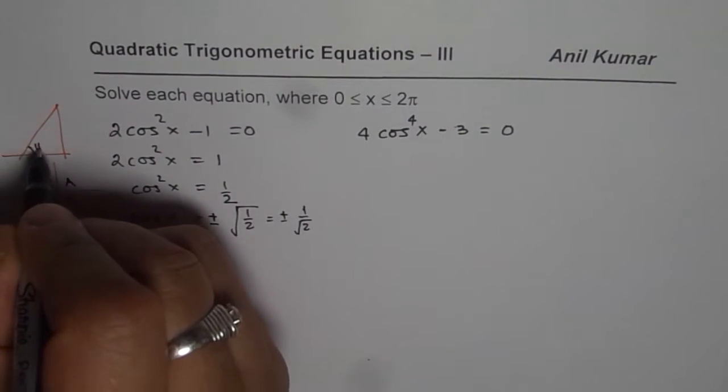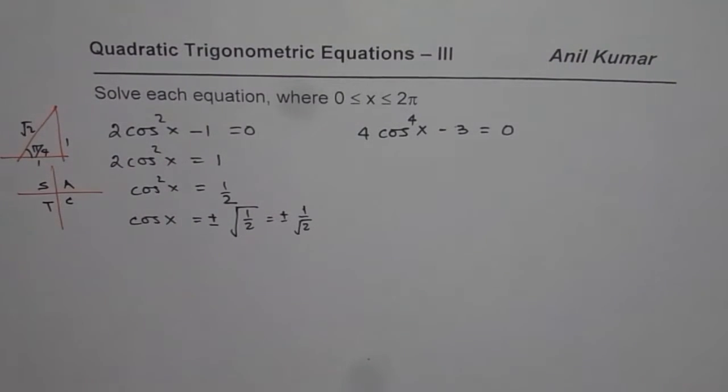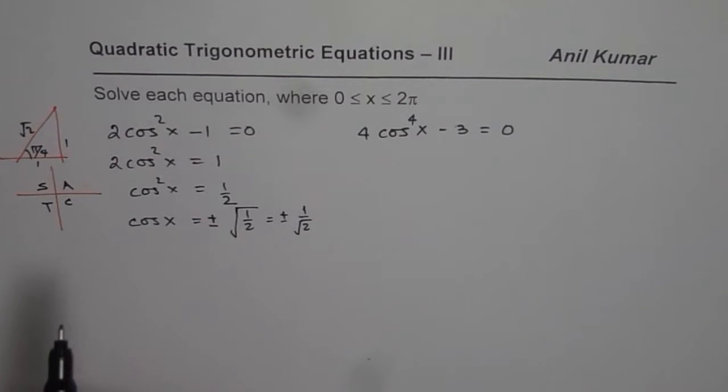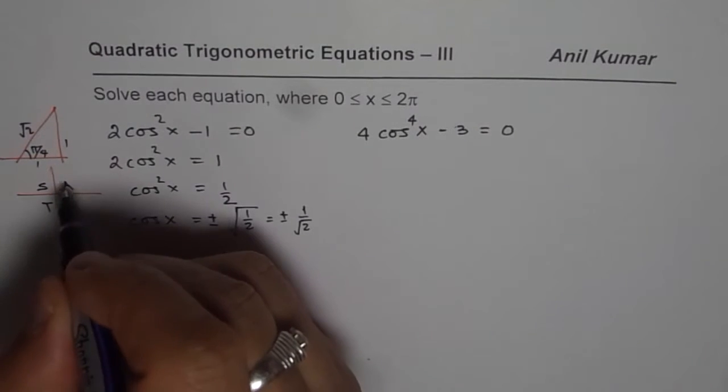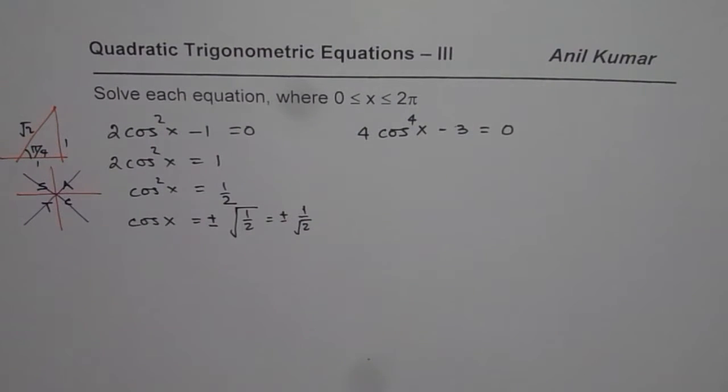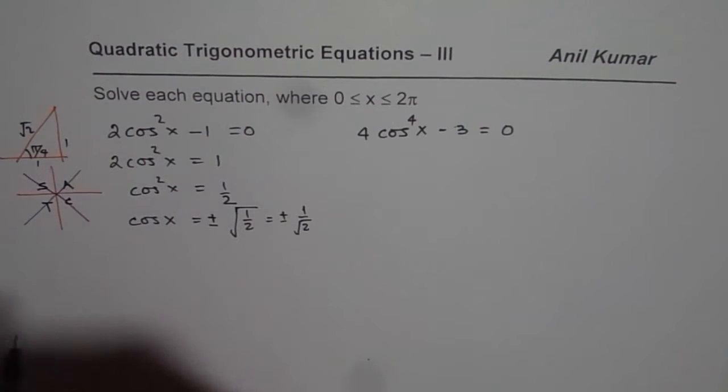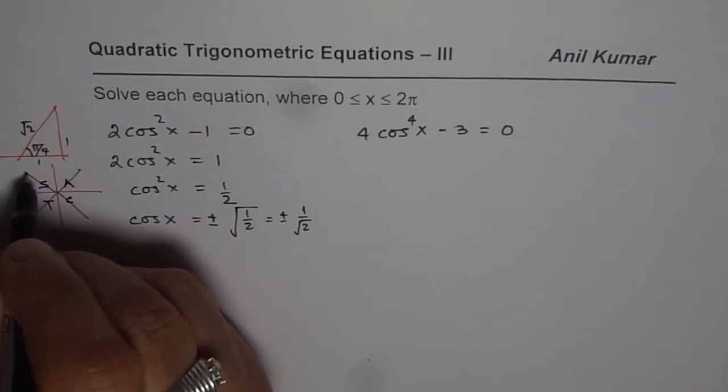So in π/4 triangle, as you know, sides are 1, 1 and hypotenuse is √2. So for π/4, cosx is going to be 1/√2. That means the four solutions are when the terminal arm is making an angle of π/4 with the horizontal or the reference angle in each case is π/4. What are these angles?